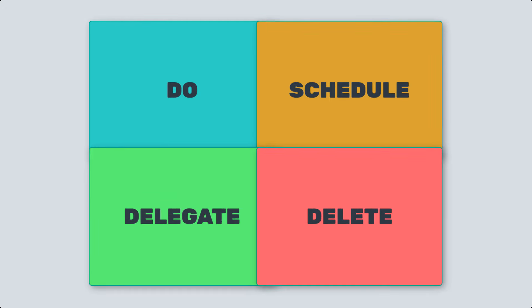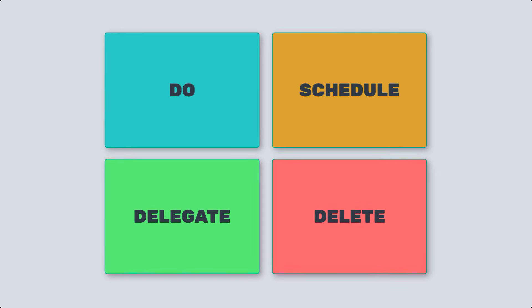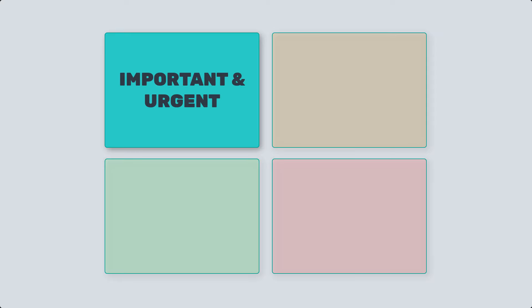In the second part of this video, we're going to understand the four quadrants in an Eisenhower Matrix. Number one: important and urgent. Tasks in this quadrant are both important and require immediate attention. They often involve deadlines, emergencies,